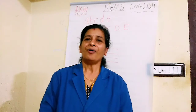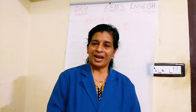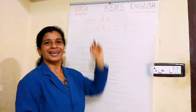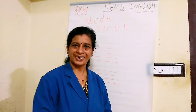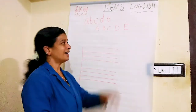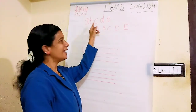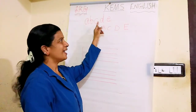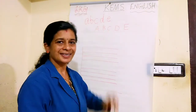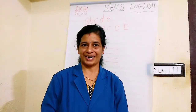Now, you have learnt these letters, isn't it? Letters are A, B, C, D and E. Okay.